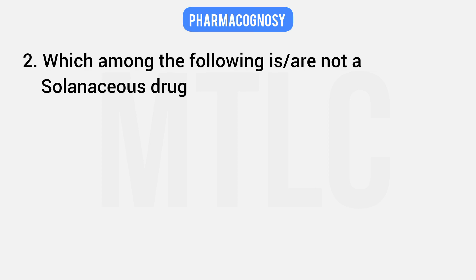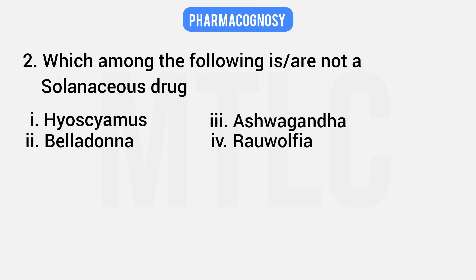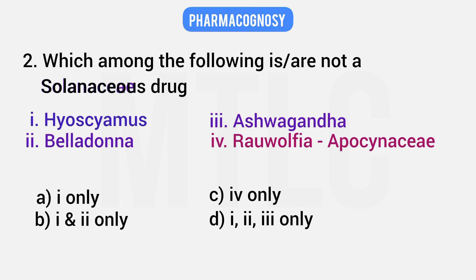Second question: which among the following is NOT a solanaceous drug? Options: Hyoscyamus, Belladonna, Ashwagandha, Rauwolfia — with answer choices being 1 only, 1 and 2 only, 4 only, or 1, 2 and 3 only. Rauwolfia belongs to the Apocynaceae family, while Hyoscyamus, Belladonna, and Ashwagandha are all in the Solanaceae family. So the correct answer is 4 only — Option C.